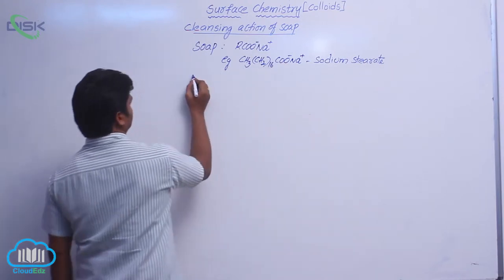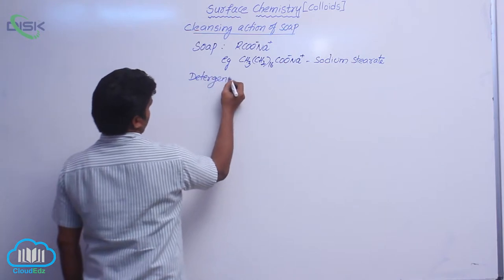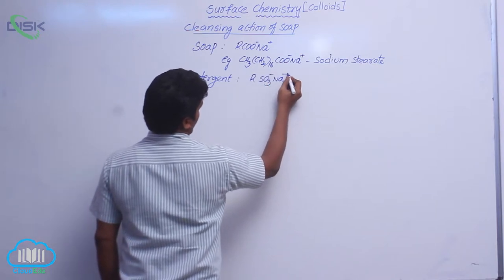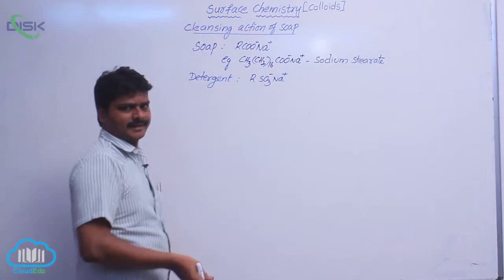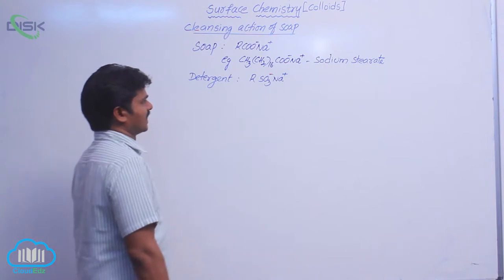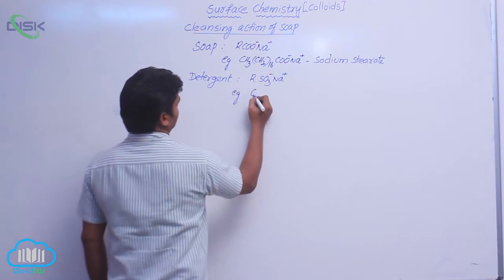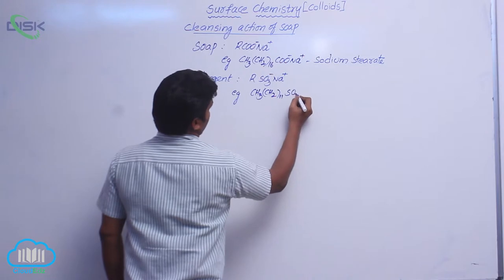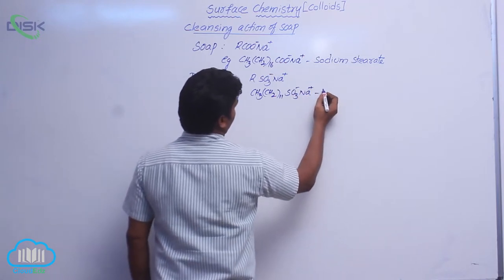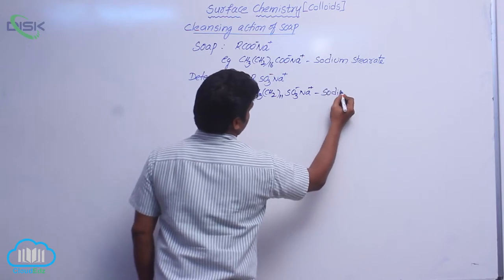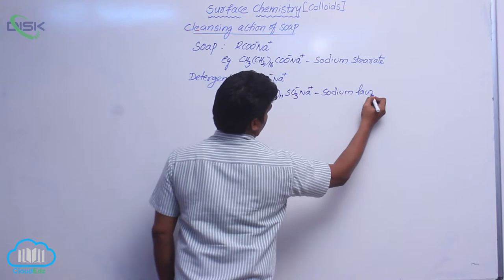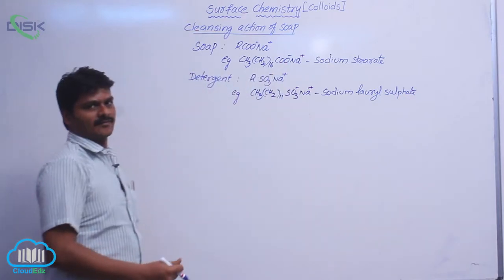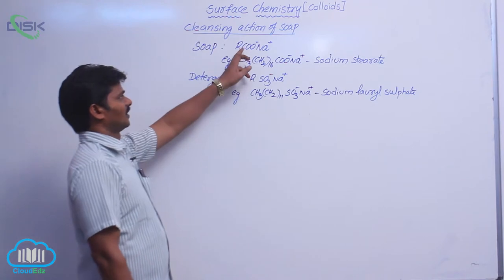Similarly, for detergent, the formula is R SO₃⁻ Na⁺. There are different detergents — cationic, anionic, and neutral detergents. An example is CH₃ (CH₂)₁₁ SO₃⁻ Na⁺, which is sodium lauryl sulfate. That is the general formula for detergent.